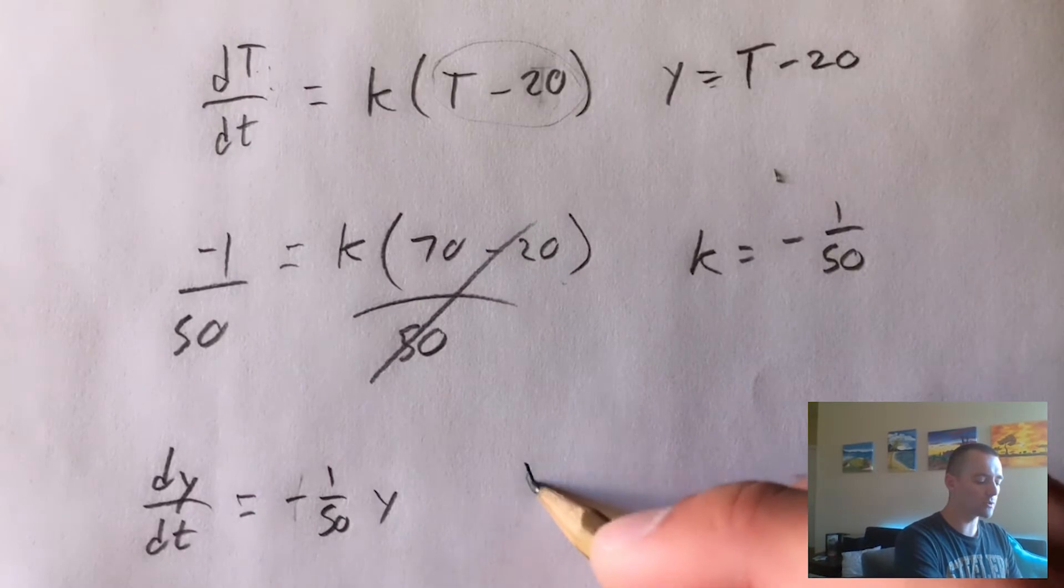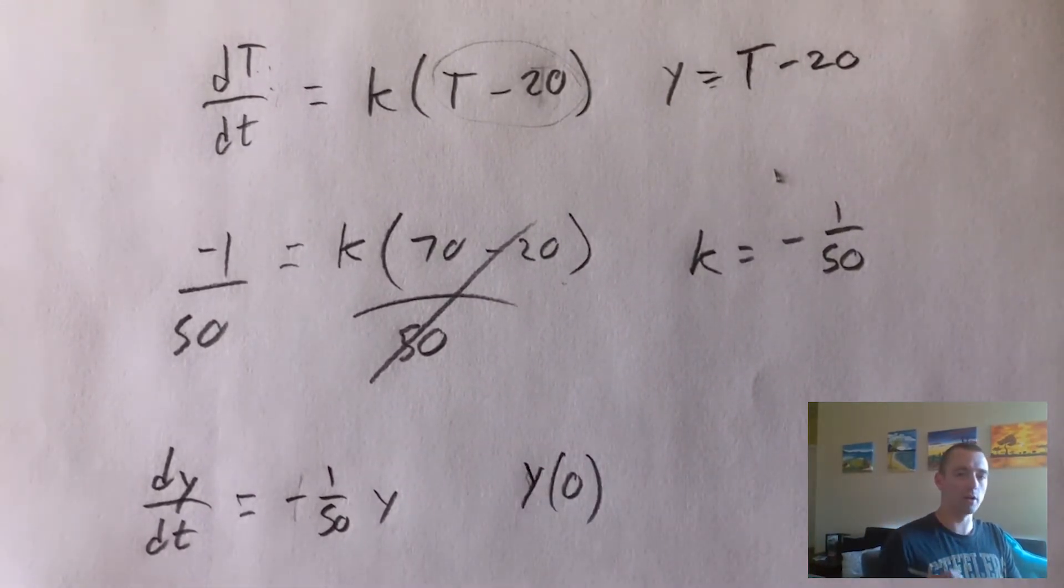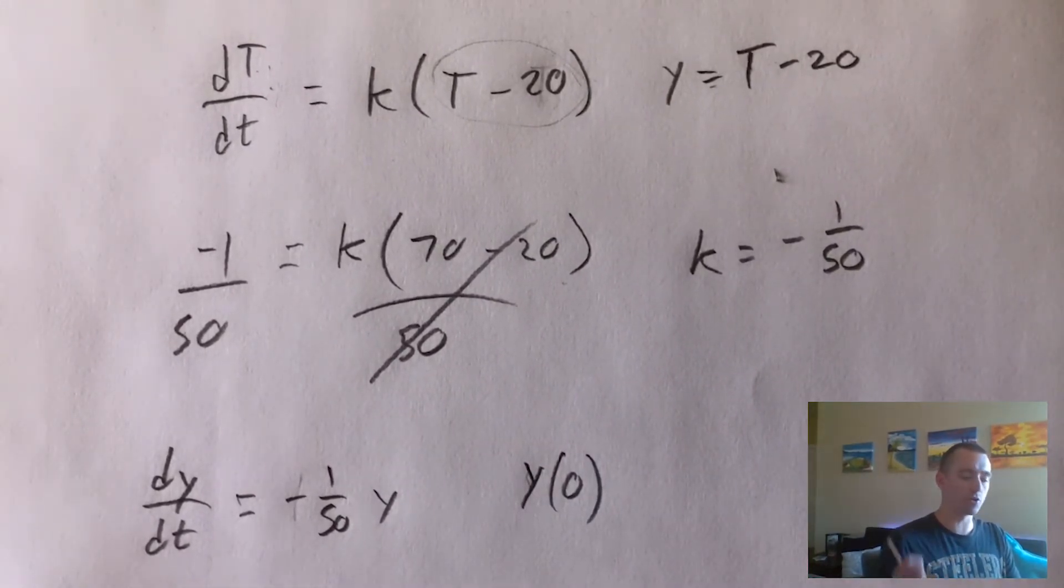And then what we also need to figure out is our initial condition, our initial Y value. When zero time has passed, right when the coffee is brewed, what is the value of Y?